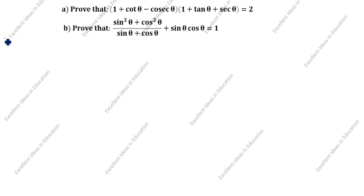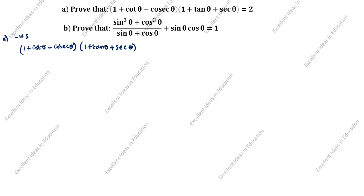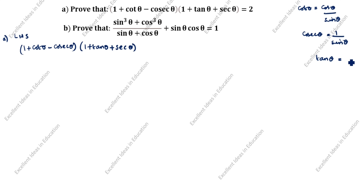What is given LHS? It is (1 + cot θ − cosec θ)(1 + tan θ + sec θ). What is cot θ formula? cos θ by sin θ. What is cosec θ formula? 1 by sin θ. What is tan θ formula? sin θ by cos θ. What is sec θ formula? 1 by cos θ.